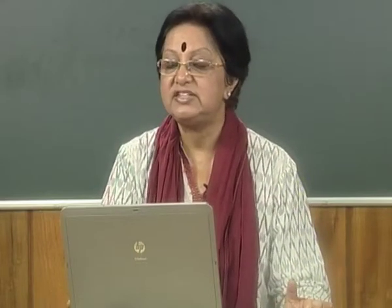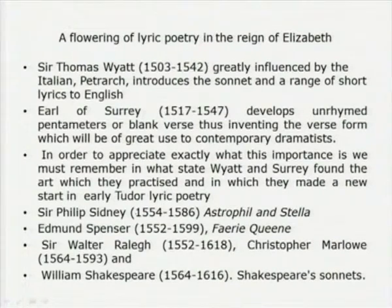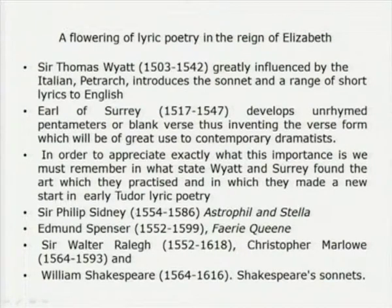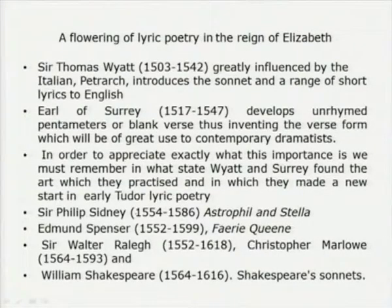Now let us look at the flowering of lyric poetry in the reign of Elizabeth. Sir Thomas Wyatt, greatly influenced by the Italian Petrarch, introduced the sonnet and a range of short lyrics to English. The sonnet form — a poem of 14 lines with four quatrains and followed by a couplet — was a new form that was introduced. The Earl of Surrey then developed unrhymed pentameters, or blank verse, thus inventing a verse form which would be of great use to contemporary dramatists. Their place in the early flowering of lyric poetry is something so strong that it went into the making of many later poets.